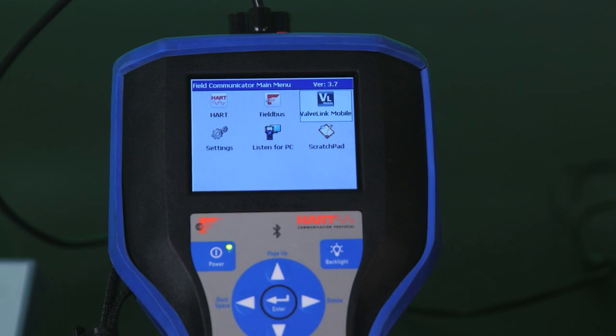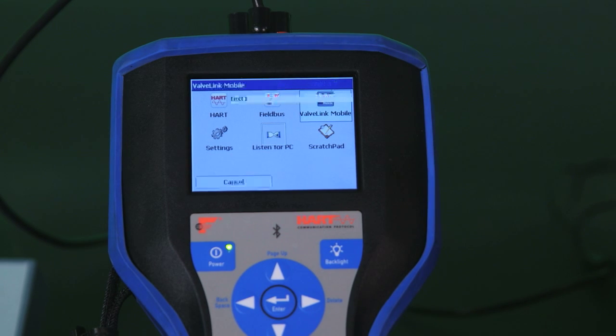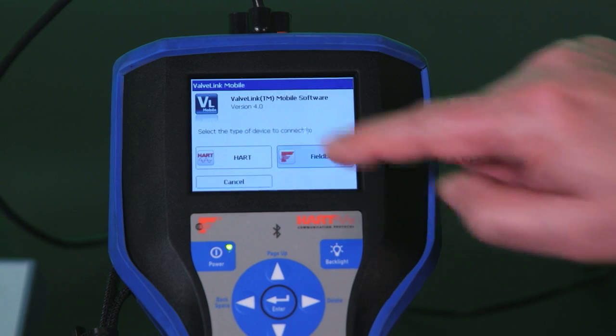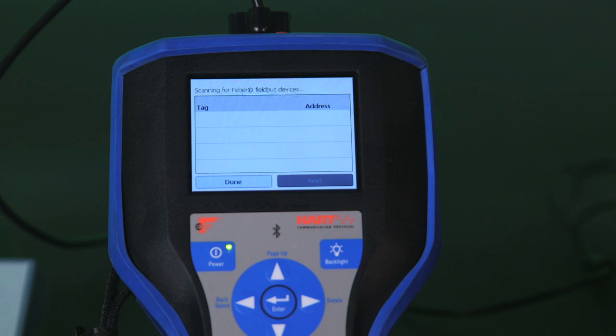Okay I'm going to start by selecting the valve link mobile application. The application is now starting up. As you can see it does both heart and foundation fieldbus now. In this case I'm going to demonstrate fieldbus so I'll select fieldbus. I want to connect to the fieldbus device so I select connect and we'll wait for it to find the fieldbus devices that are connected. There should be one hooked up right now.